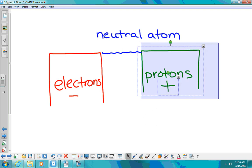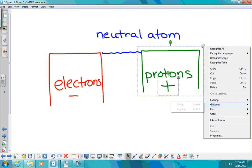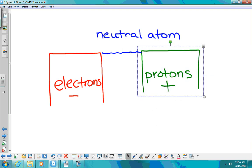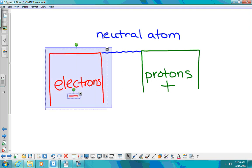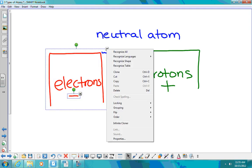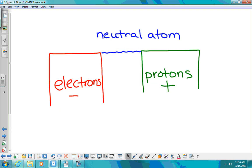So I have equal number of positive charges and equal number of negative charges. So let's do this real quick. Group this one. Okay, so if I have a neutral atom, they're equal to each other.